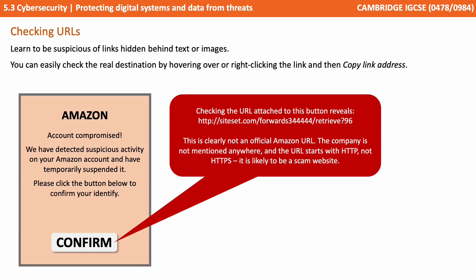Learn to be suspicious of links hidden behind text such as 'click here' or attached to image buttons. You can easily check the real destination by hovering over the link or right-clicking and choosing 'copy link address' or similar. For example, when checking the URL attached to a button, if it leads to a very bizarre URL that doesn't mention the company, and starts with HTTP rather than HTTPS, this is more than likely a scam.